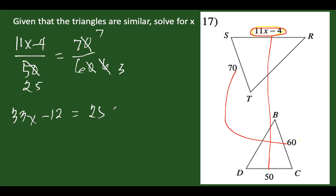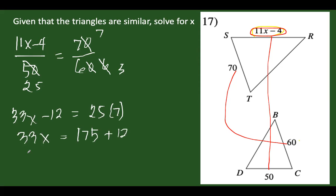So 33x is equal to 25 times 7, which is 175, plus 12, giving 33x equals 187.